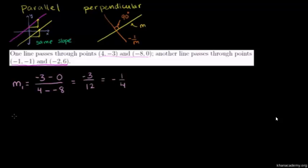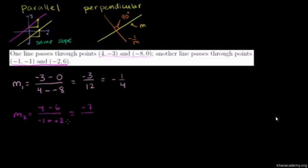For the second line, the slope is negative 1 minus 6 over negative 1 minus negative 2. Negative 1 minus 6 is negative 7, and negative 1 minus negative 2 is the same as negative 1 plus 2, which is 1. So the slope here is negative 7. Their slopes are neither equal — so they're not parallel — nor are they the negative inverse of each other. So this is neither parallel nor perpendicular. These two lines intersect but not at a 90 degree angle.